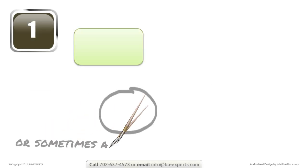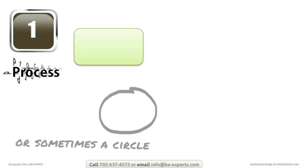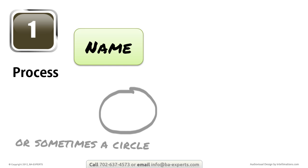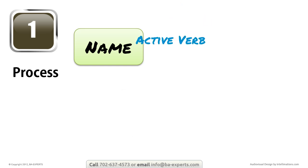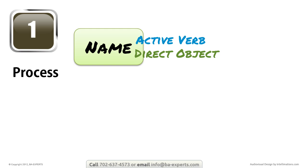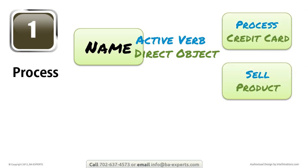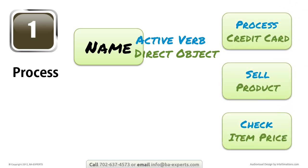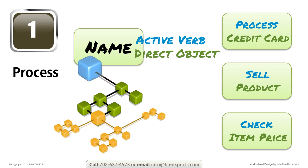A rounded rectangle represents a process at some level of detail that has to have a name. The name consists of an active verb — what is done — and a direct object — what it is done to. For example: process credit card, sell product, check item price. As you can see from the examples, the named process can be at any level of detail, from the very large, like sell product, to the minute, like check item price.